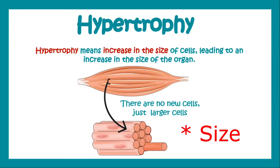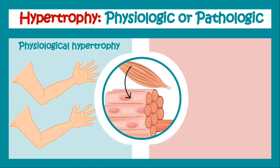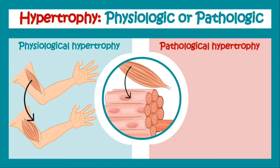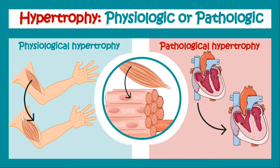In hypertrophy there is only an increase in the size of cells — there are no new cells. Now, hypertrophy can be either physiological hypertrophy, where your muscles increase in size due to some physiological stimulation such as exercise, or there can be pathological hypertrophy, like in the case of hypertensive cardiac hypertrophy, where hypertension is a pathological condition which leads to hypertrophy of the heart.